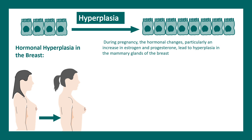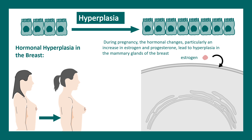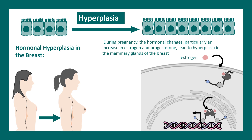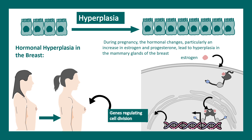At the molecular level, estrogen binds to estrogen receptors that enter the cell and nucleus. Estrogen receptors can lead to transcription of many genes associated with cell division. That is how more cells get added to the mammary gland and the breast becomes bigger.